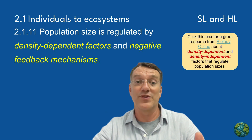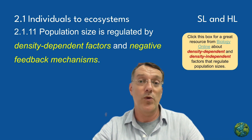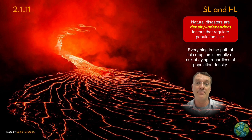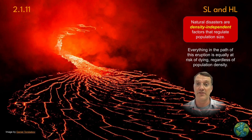Population regulation occurs through density-dependent factors and negative feedback mechanisms, as we've already seen in topic one with predator-prey relationships. Some factors are density independent — that means they are not related to the density of the population. Natural disasters are a classic example: volcanic eruptions affect populations regardless of the size or density of the organisms that live there. Everything in the path of a lava flow is at equal risk of dying.